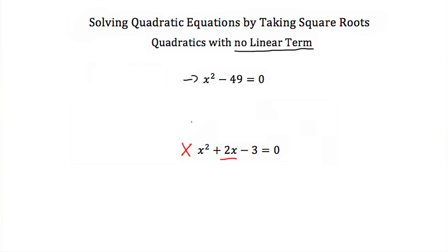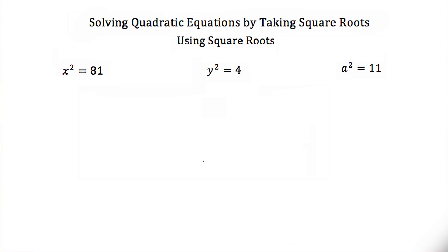So if I have a quadratic equation that has no linear term, how would I use square roots to solve for my x values? Well, first let's talk about using square roots. If I have x squared is equal to 81 and I wanted to solve for x, I would just take the square root of both sides, because the square root is the opposite of a square.